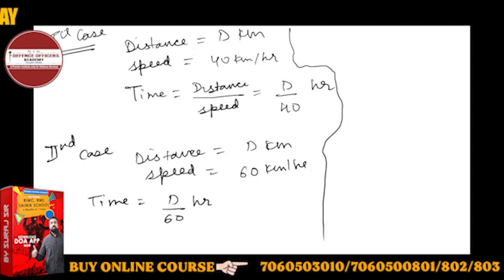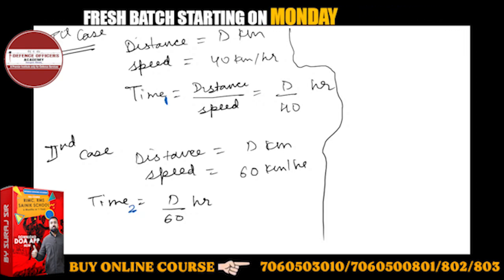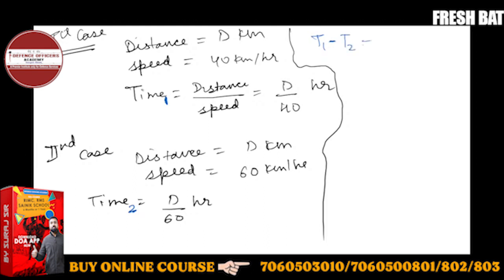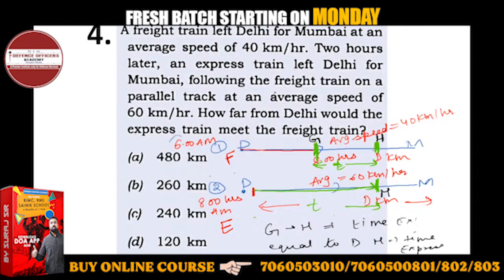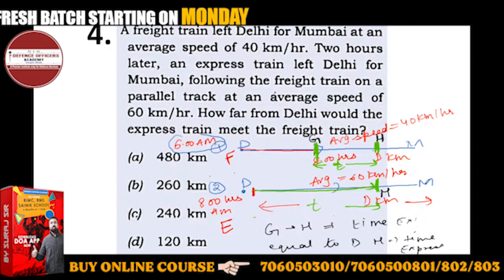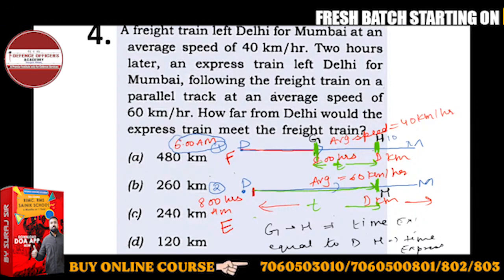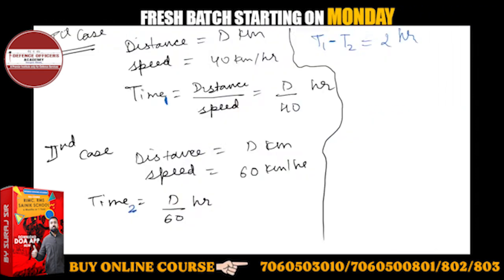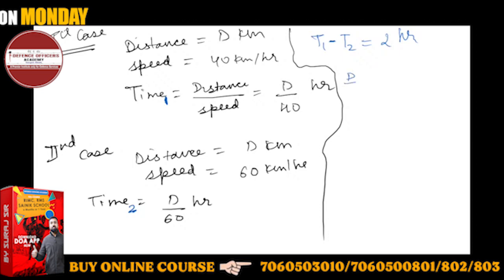Now you should know the key difference: T2 is less than T1 because the express train is faster. If we do T1 minus T2, there is a difference of 2 hours — because the express train departed 2 hours later but meets the freight train at the same point. So the equation is: D/40 minus D/60 equals 2.